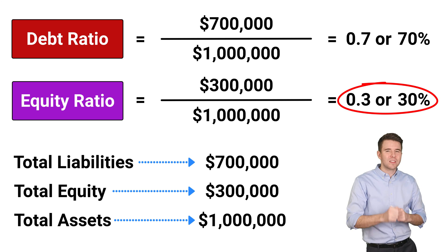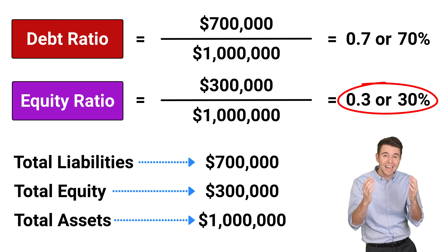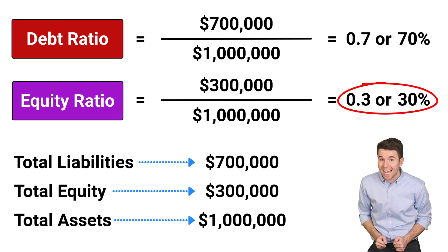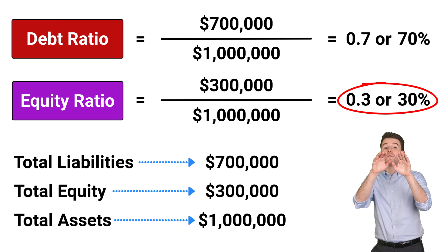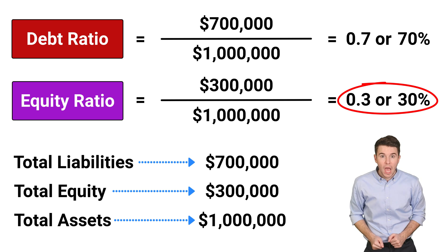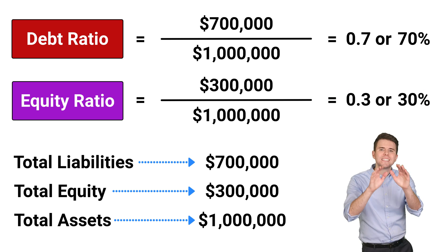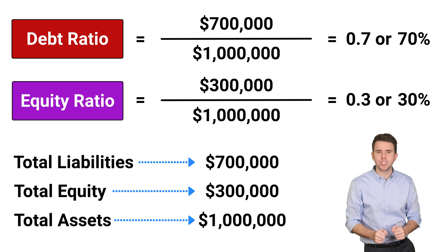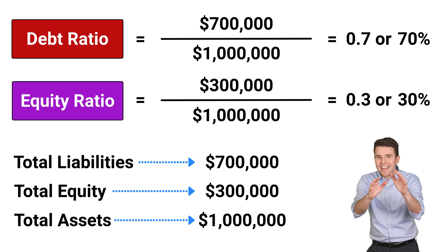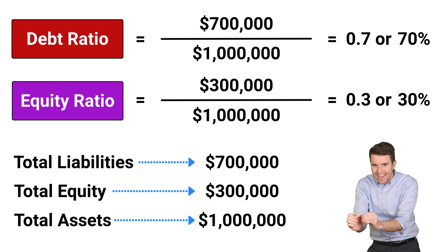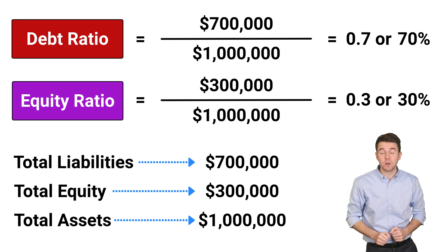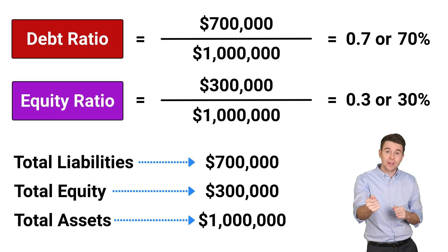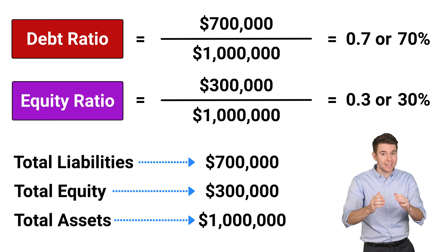But what does a 30% Equity Ratio tell us? It means that 30% of a company's assets are funded through equity. A lower equity ratio suggests that a company has a greater portion of its assets financed by debt and is generally considered more risky, as debt requires interest and principal payments.